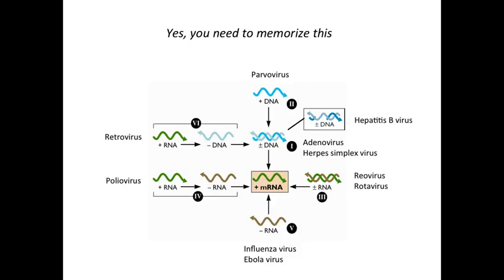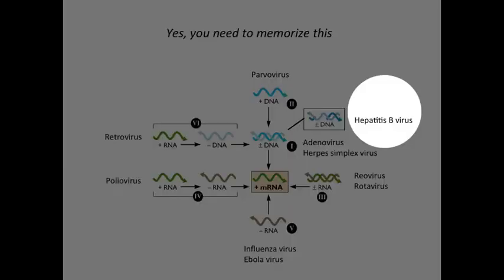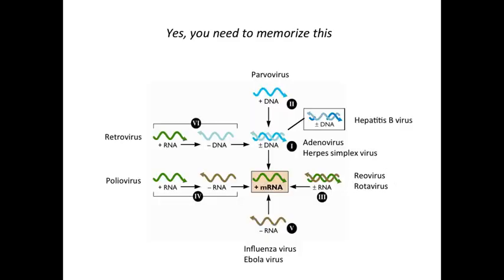As we illustrate these processes, we'll use specific viruses as examples. Negative-strand RNA viruses include influenza and Ebola. Poliovirus is a plus strand. Retroviruses are the ones that go from a plus strand to a DNA intermediate. Parvoviruses, hepatitis B, adenovirus, herpes, reoviruses, and rotavirus are also examples. These are just a few of all the viruses that exist, but we'll return to them over and over. For example, reovirus has a double-stranded RNA genome.